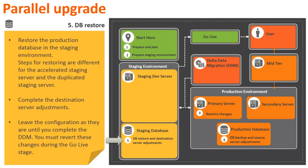In the fifth stage, restore the production database in the staging environment. Steps for restoring the database are different for the accelerated staging server and the duplicated staging server. After you restore the database, complete the destination server adjustments. Leave the configurations as they are until you complete the delta data migration. You must revert these changes during the go live stage.